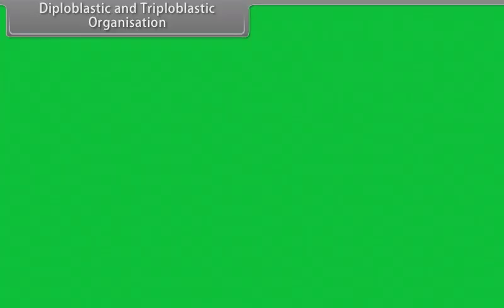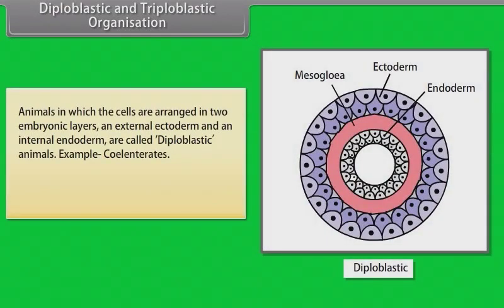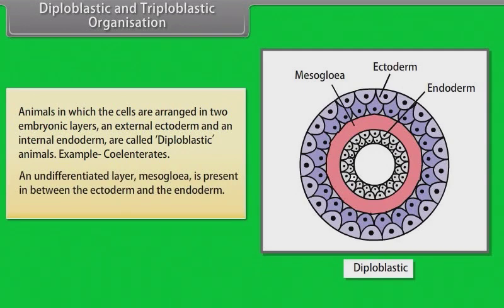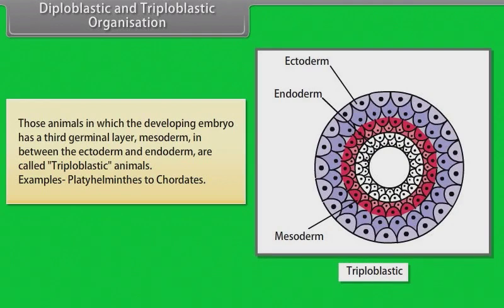Diploblastic and triploblastic organization: Animals in which cells are arranged in two embryonic layers — an external ectoderm and an internal endoderm — are called diploblastic animals. Example: Cnidarians. An undifferentiated layer, mesoglea, is present between the ectoderm and endoderm. Animals in which the developing embryo has a third germinal layer, mesoderm, between the ectoderm and endoderm are called triploblastic animals. Example: Platyhelminthes to chordates.